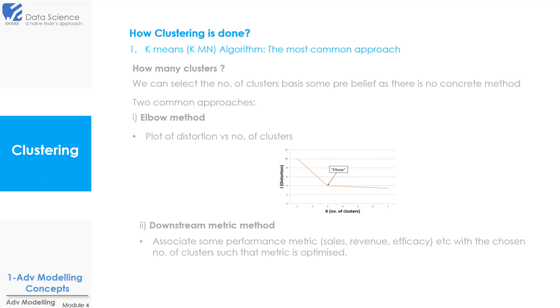Then the other method is the downstream metric method. In this method we associate some performance metrics such as sales, revenue, efficacy, etc. with the chosen number of clusters. And then our aim is to get the optimized metric.